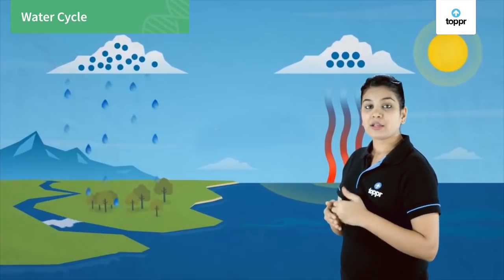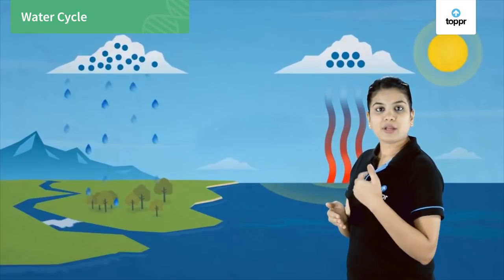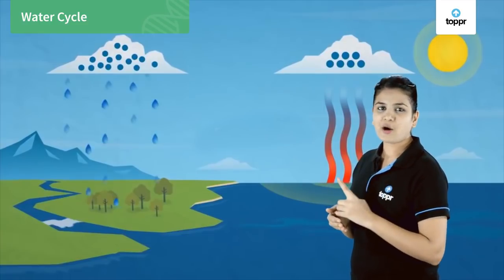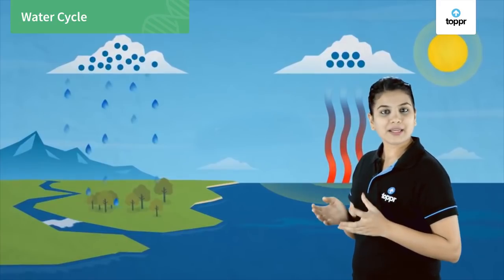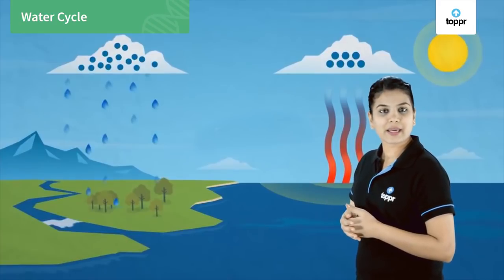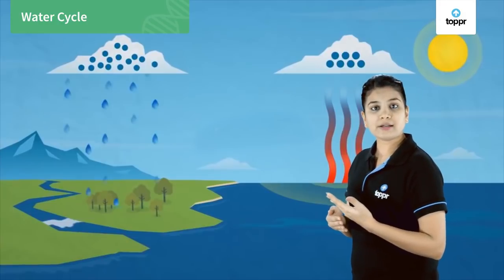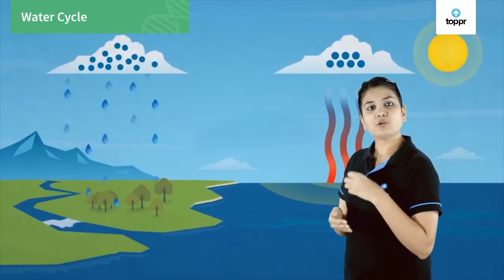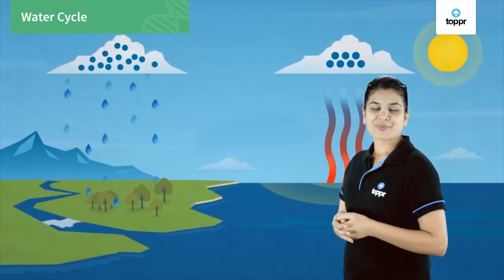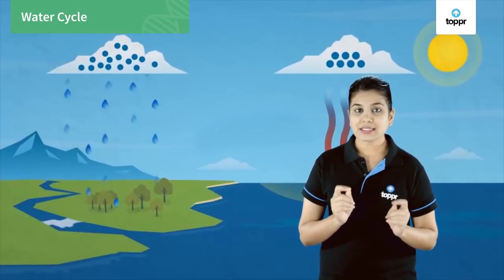This way the water that had gone out from the earth is now back on the earth's surface again, and the water cycle ends. This water cycle basically continues over and over again throughout the seasons and throughout the year. In this lesson you have now understood how the water cycle helps in maintaining a balance in the biosphere.